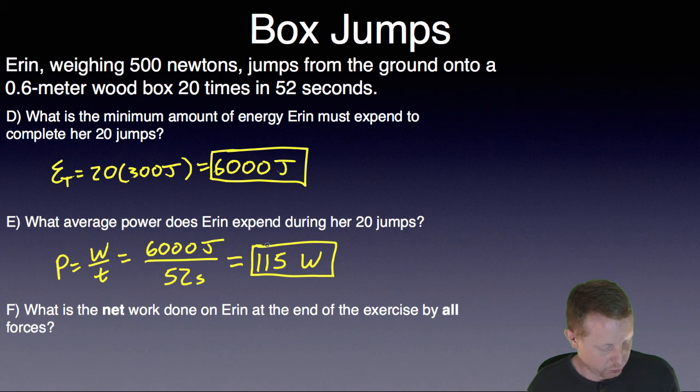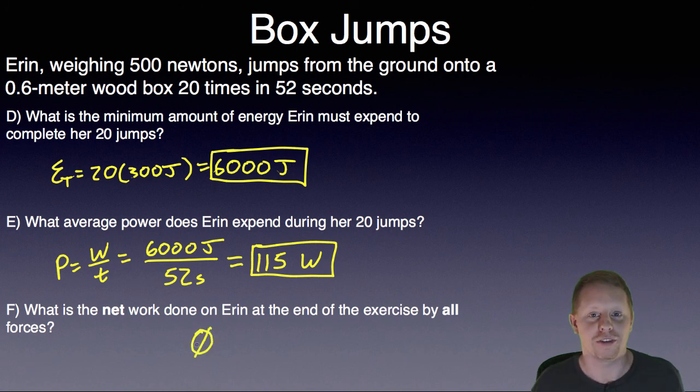And finally, what is the net work done on Aaron at the end of the exercise by all forces? She ends up where she starts, another trick question. So the total net displacement is zero, therefore the net work done must also be zero.